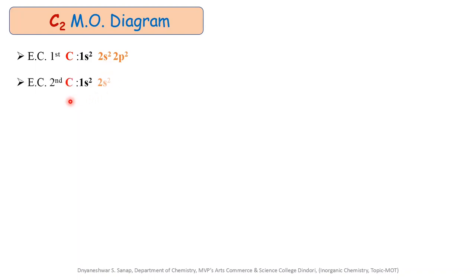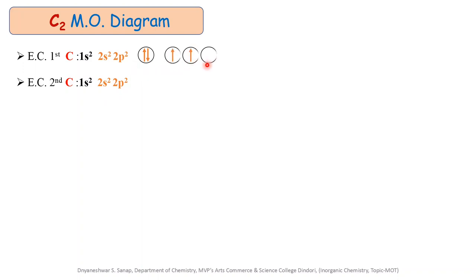The electronic configuration for the second carbon atom is also 1s², 2s², and 2p². This 1s atomic orbital also does not take part in bonding. Writing the valence electronic configuration of the carbon atom in tabulated form: for the first atom 2s² and 2p², similarly for the second atom 2s² and 2p². There are a total of 8 electrons which participate during the formation of the C2 molecular orbital.